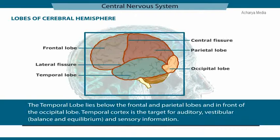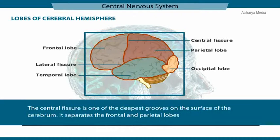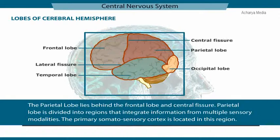The temporal lobe lies below the frontal and parietal lobes and in front of the occipital lobe. The temporal cortex is the target for auditory, vestibular, or balance and equilibrium, and sensory information. The central fissure is one of the deepest grooves on the surface of the cerebrum, and it separates the frontal and parietal lobes.